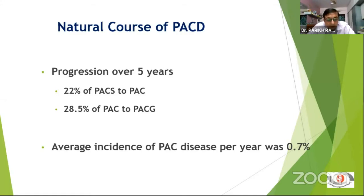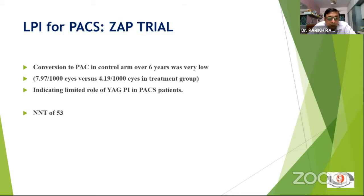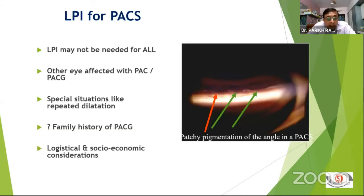ASOCT has been promoted for confirmation of PACD, but it cannot diagnose synechiae and cannot replace gonioscopy at this point in time — it has a very high false positive rate and cannot even be used as a screening tool. Regarding PACS management, the ZAP trial showed that conversion to PAC even in the control group was very small — 8 versus 4 in 1,000 eyes. The number needed to treat of more than 50 indicates that not all PACS patients require iridotomy. However, selected patients — such as those with the fellow eye having PAC or PACG, with special situations like repeated dilation or logistic issues — can have iridotomy performed.